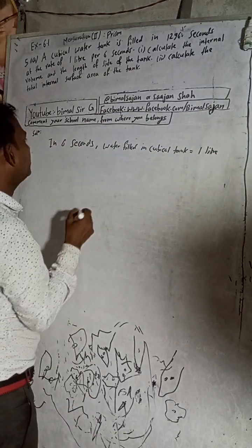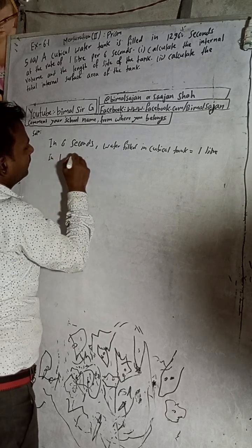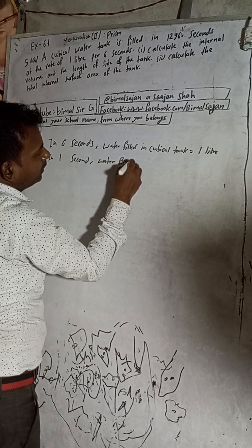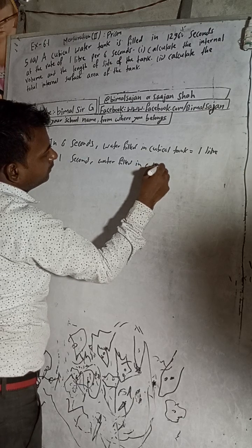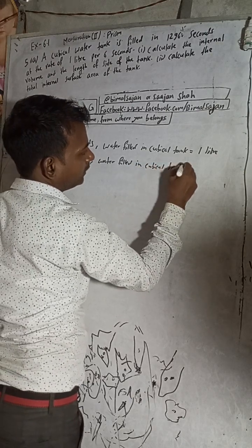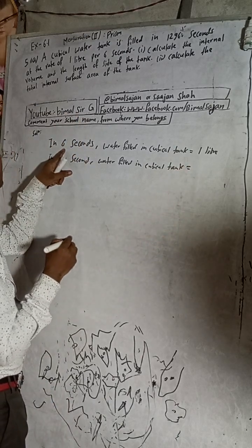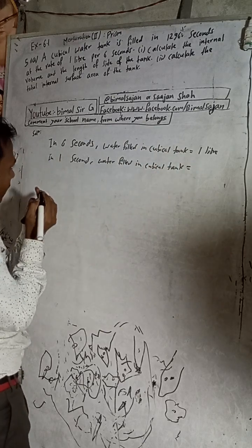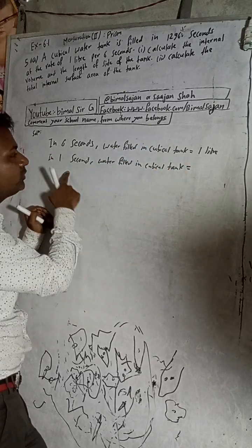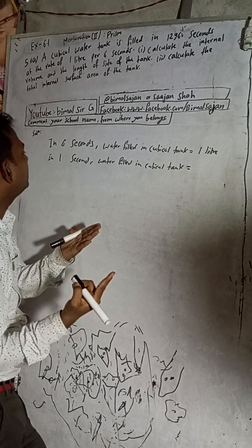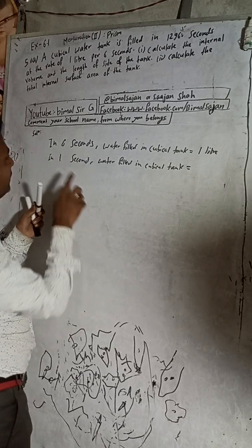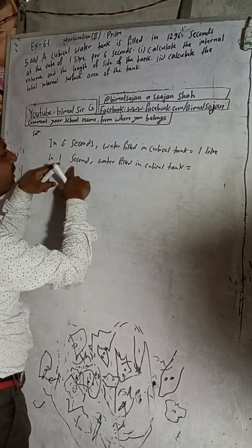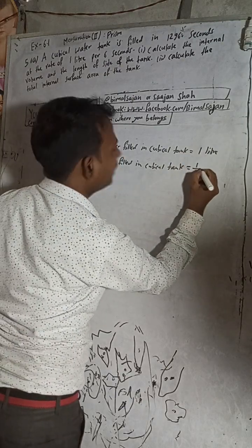Therefore, water filled in the cubical tank per second is 1 liter. If the time increases, we multiply; if it decreases, we divide. Because in 1 second 1 liter is filled, for 1296 seconds we need to multiply. So water filled = 1 liter × 1296 seconds.